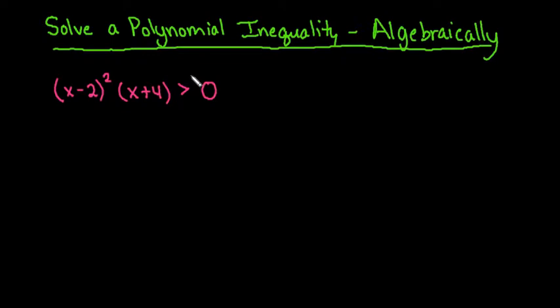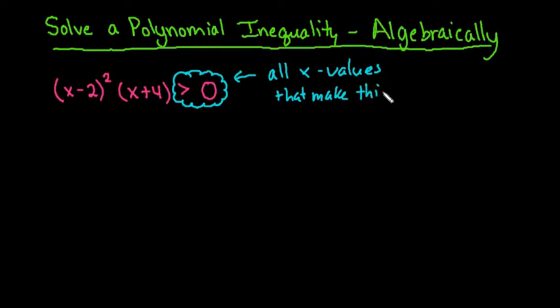So with this inequality (x-2)²(x+4) > 0, we are looking for all x values that are greater than zero, that make this positive. We're looking for all positive values that when I plug them in, I'm going to end up with a positive result.